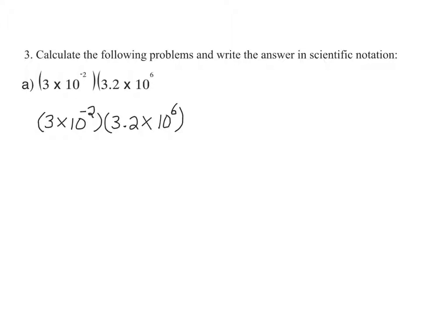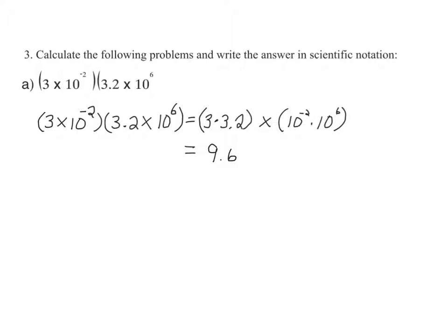To multiply two numbers in scientific notation, we multiply the whole numbers individually and then multiply the base 10 exponents individually. That is, we have 3 times 3.2, times 10 to the negative second times 10 to the sixth. Since 3 times 3.2 gives us 9.6, and when multiplying values with exponents we keep the same base and add the exponents, we would have times 10 to the negative 2 plus 6, which is equal to 9.6 times 10 to the fourth.